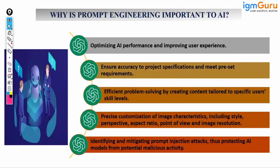When you are using LLM models that create images, you can provide detailed instructions. For example, in a previous demo on generating images of training on Mars, I gave small instructions describing the image. We can explain the image characteristics — how the image should look, the aspect ratio, resolution, and size. Prompt engineering helps us add all the necessary information about the desired output.